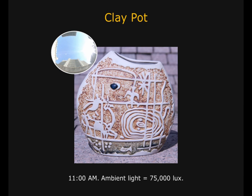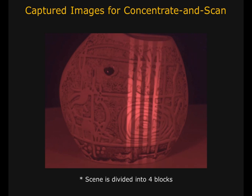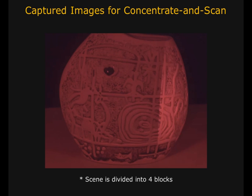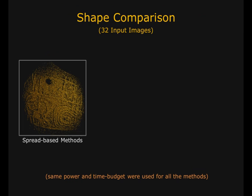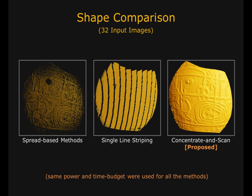Let's look at some experimental results. This is a clay pot placed outdoors on a clear day at 11 a.m. Here are the captured images — the entire scene is divided into four blocks, which are scanned sequentially. These are the recovered shapes. The spread-based method achieves a low SNR, resulting in holes in the recovered shapes. The single-line striping has to use very thick stripes due to a small time budget, so the low-resolution result loses all surface details and has holes at the boundary discontinuities. In contrast, given the same time and power budget, the proposed method achieves high-quality results.